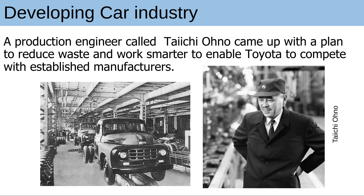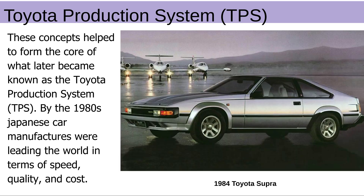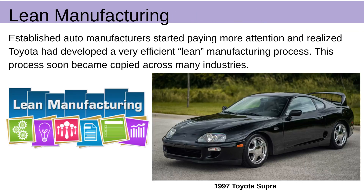In the developing car industry, a production engineer called Taiichi Ohno came up with a plan to reduce waste and work smarter to enable Toyota to compete with established manufacturers. These concepts helped form the core of what later became known as the Toyota Production System, TPS. By the 1980s, Japanese car manufacturers were leading the world in terms of speed, quality and costs of manufacture.